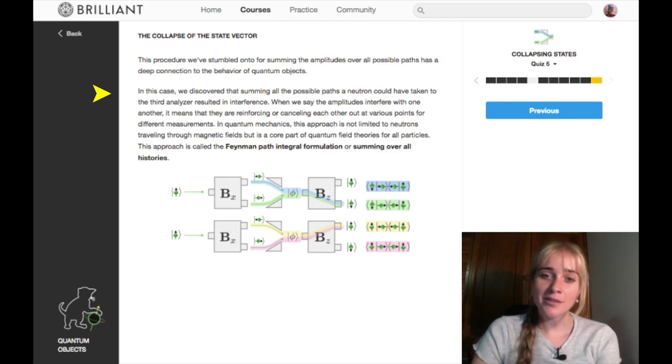In quantum mechanics, this approach is not limited to neutrons traveling through magnetic fields, but is a core part of quantum field theories for all particles. So that idea of constructive or destructive interference you probably would have seen in waves, where if the top of two waves are at the same point you get an extra big wave. But if you have the top of a wave meeting the bottom of a wave, they cancel out to nothing and you'll get flat water. So that is essentially what's happening here with these particles, with our waves of probability in a way.